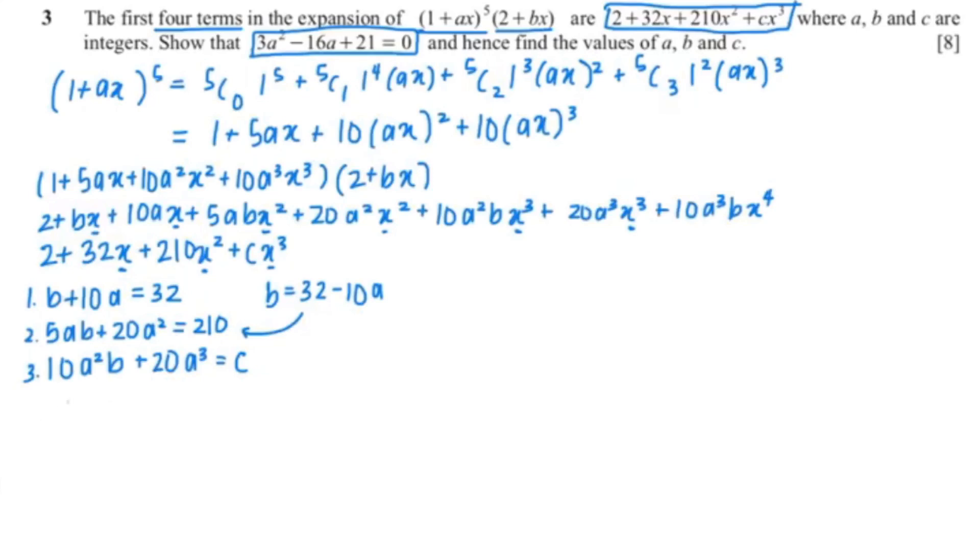So I'm going to substitute equation 1 into equation 2 so that's 5a times (32 minus 10a) plus 20a² equals 210.